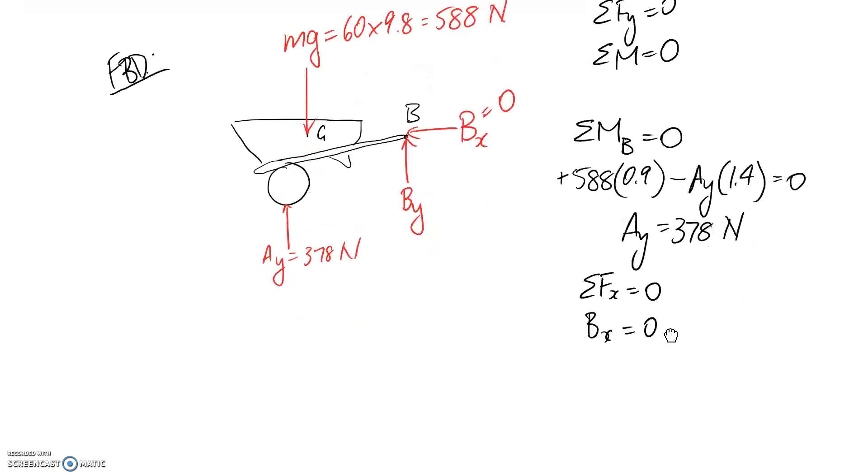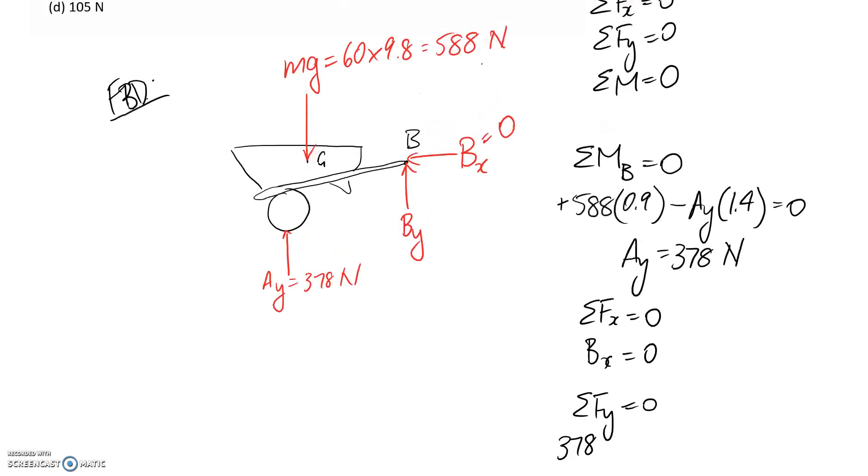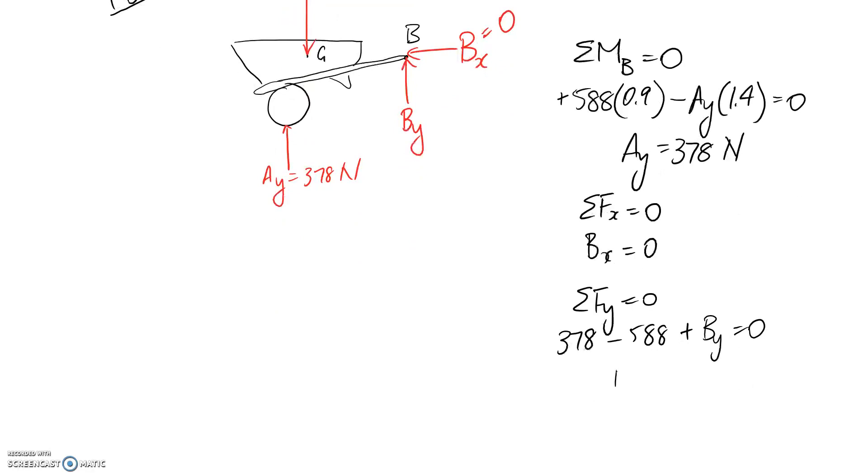And then in terms of the y direction we have 378 going up so it's positive. We have this weight force going down so it's negative. And then we have By going up so it's positive. So By here works out to 210 newtons, comes out positive so direction was correct.